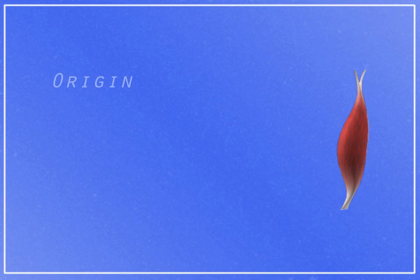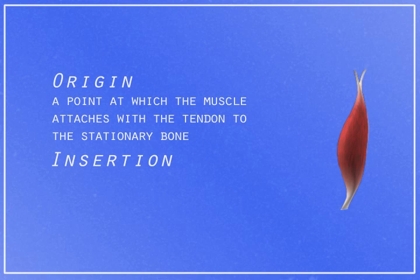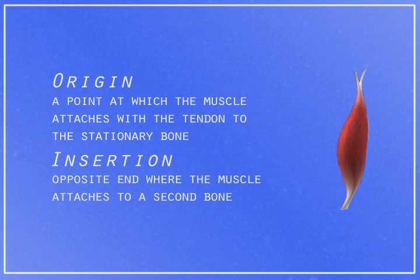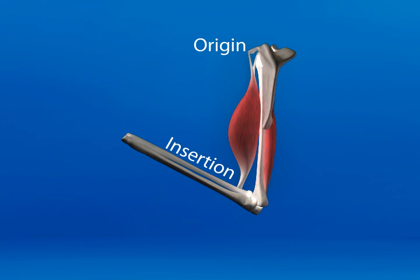Every muscle has an origin and an insertion. For a specific muscle in its primary movement, the origin is the point at which the muscle attaches with a tendon to the stationary bone. The opposite end where the muscle attaches to a second bone is the insertion. Both origin and insertion are important for understanding the function of a muscle. The best way to decipher which is the insertion and which is the origin is to reason through the muscle and its movement. When you flex a muscle, the insertion moves towards the origin. So the origin of your bicep is near your shoulder and the insertion is on the top of your forearm.